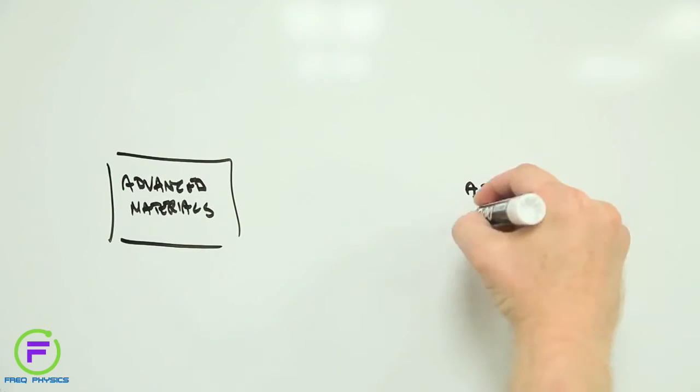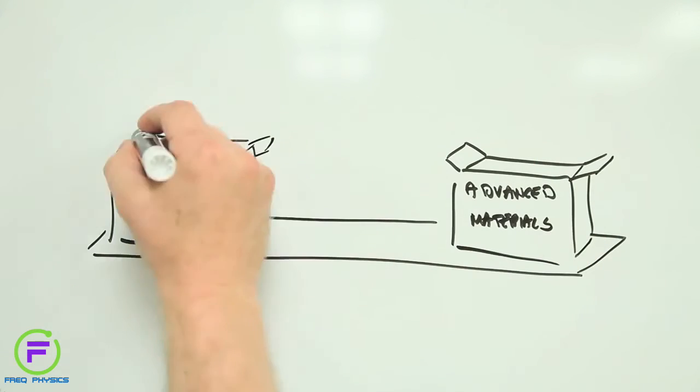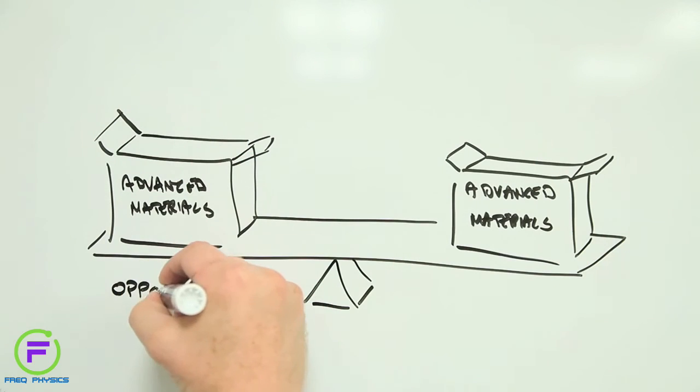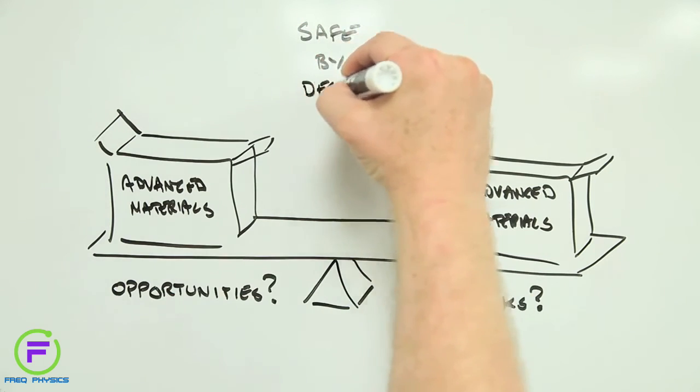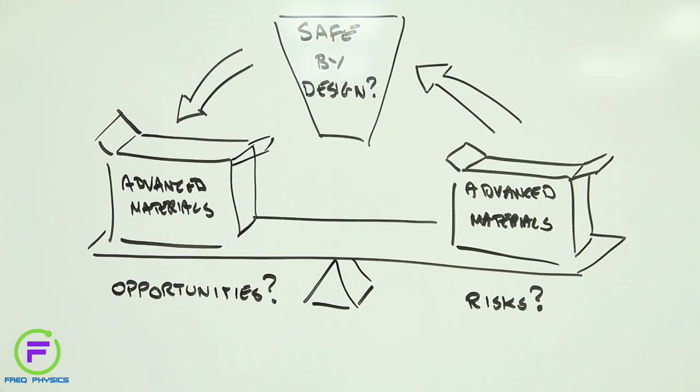At this point, you'll have a pretty good idea what advanced materials are, and what might make them potentially risky. But there's one question that hasn't been addressed so far. Are we smart enough to create advanced materials that are safe by design?